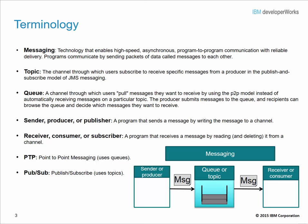The other messaging model is called point-to-point. In point-to-point, the sender of the message utilizes a channel called a queue, and the receiver of the message will query the queue in order to receive that message.